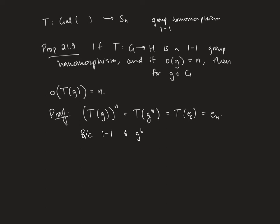Because we're one-to-one and g to the k is not equal to the identity in G for k less than n and greater than or equal to one, we have that T(g) to the k, which is the same thing as T(g to the k), can't be equal to the identity of H. Because our homomorphism is one-to-one, so only the identity gets to go to the identity. And that's it. So that tells us that the order of T(g) is n, because smaller powers aren't going to work.